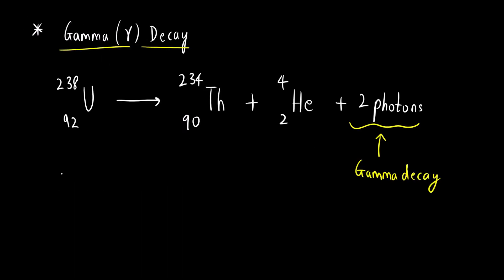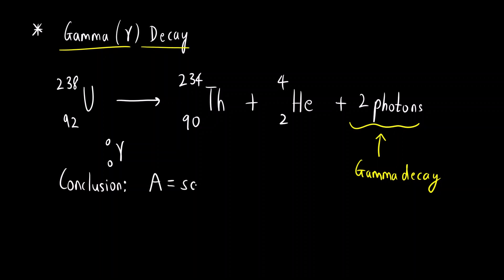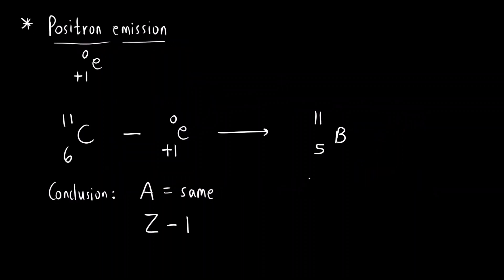For gamma decay, a gamma particle is electromagnetic radiation, so both its charge and mass are zero. Therefore, whenever gamma decay takes place, both the atomic mass number and the atomic number remain the same.